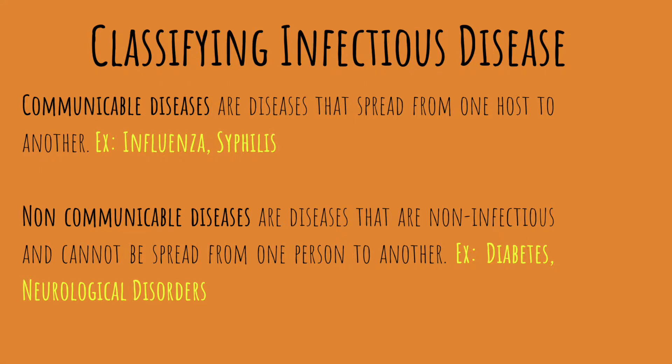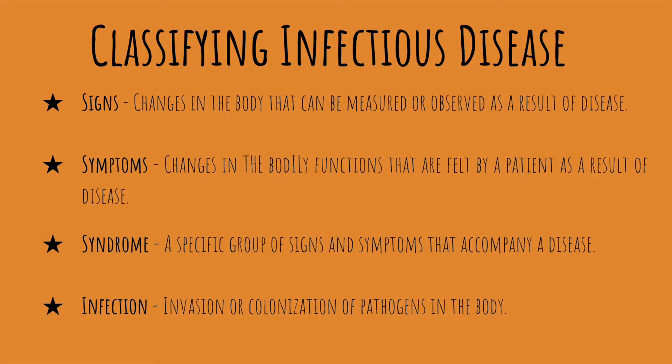There are two main ways to classify infectious diseases: communicable and non-communicable. Communicable diseases are spread from one host to another — anything contagious — such as influenza and syphilis. Non-communicable diseases are not caused by a pathogen or infection and can't be spread from host to host; diabetes is an example, caused by blood sugar malfunctions rather than infection.